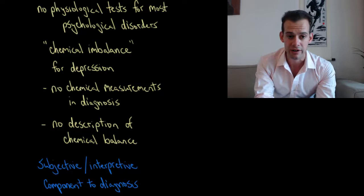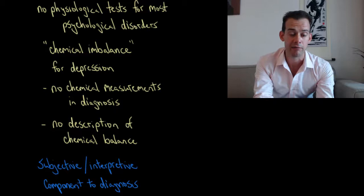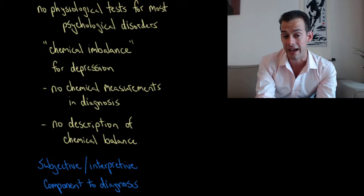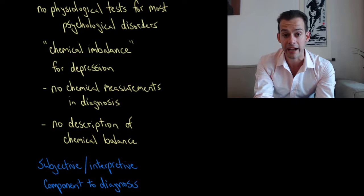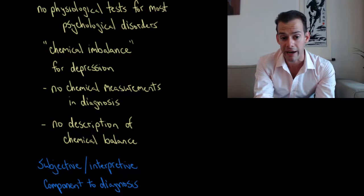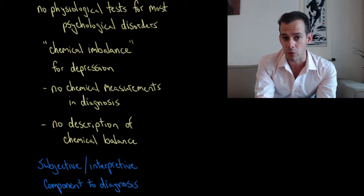You see this in advertisements for antidepressants, you hear people talk about depression as being related to some chemical imbalance and this might lead you to believe that there's some sort of measurement of chemicals that occurs in the diagnosis of depression. And that's not the case. There are no chemical measurements that are used to confirm a diagnosis of depression. We don't have ways to measure neurotransmitters in a living human brain. And so it's also the case that there's no description of what an appropriate chemical balance would be. So when we talk about a chemical imbalance, it's not very useful because we don't actually know what the appropriate balance would be. So to talk about an imbalance doesn't make much sense.